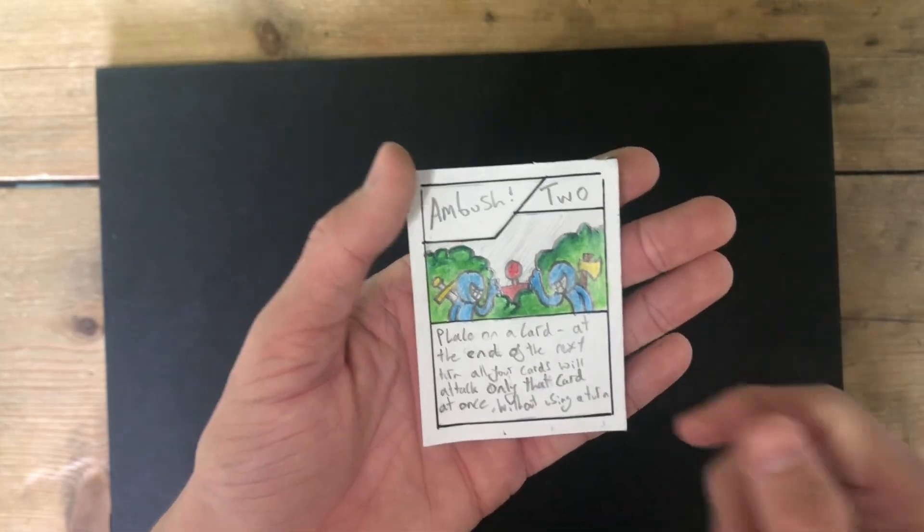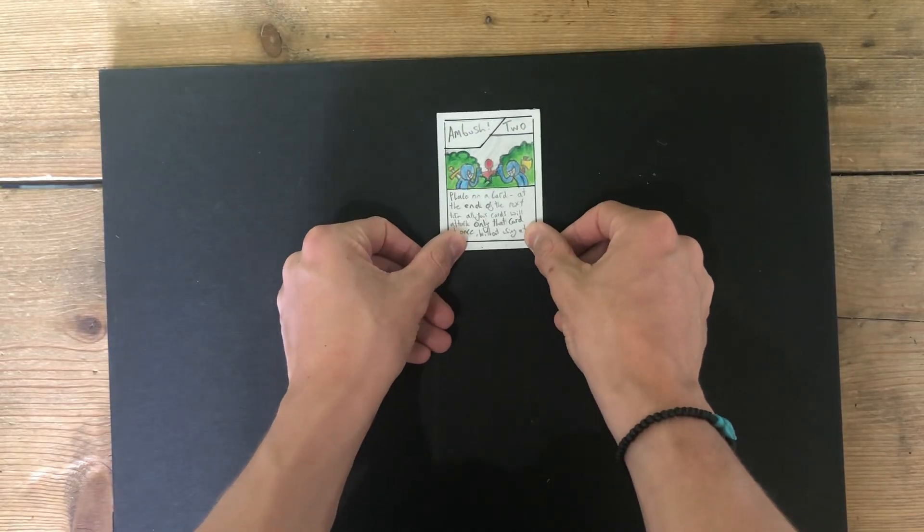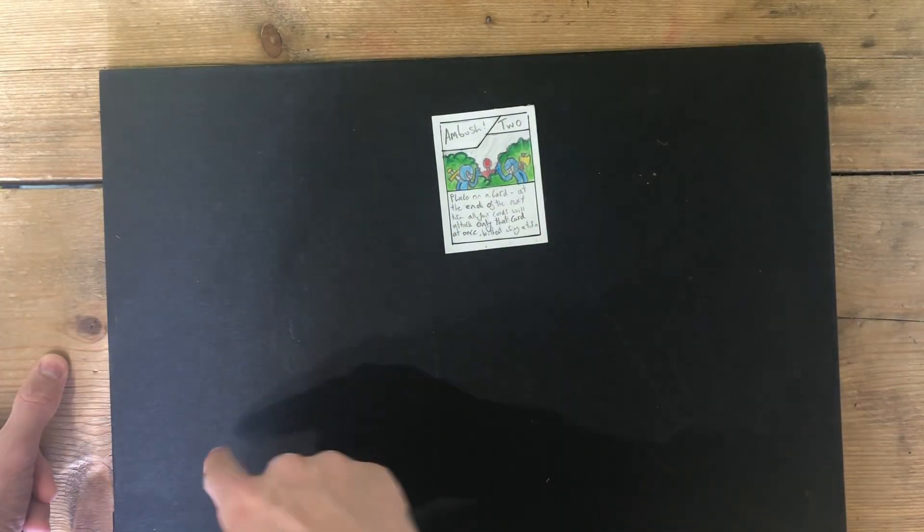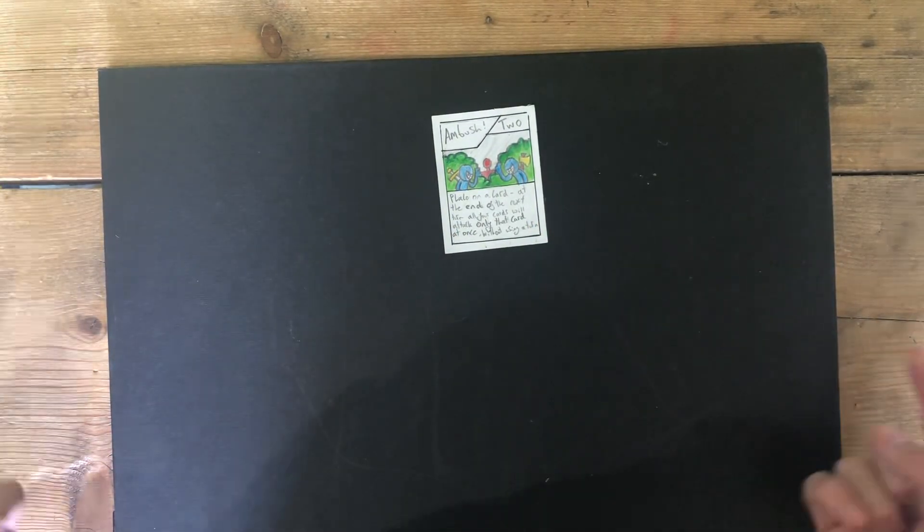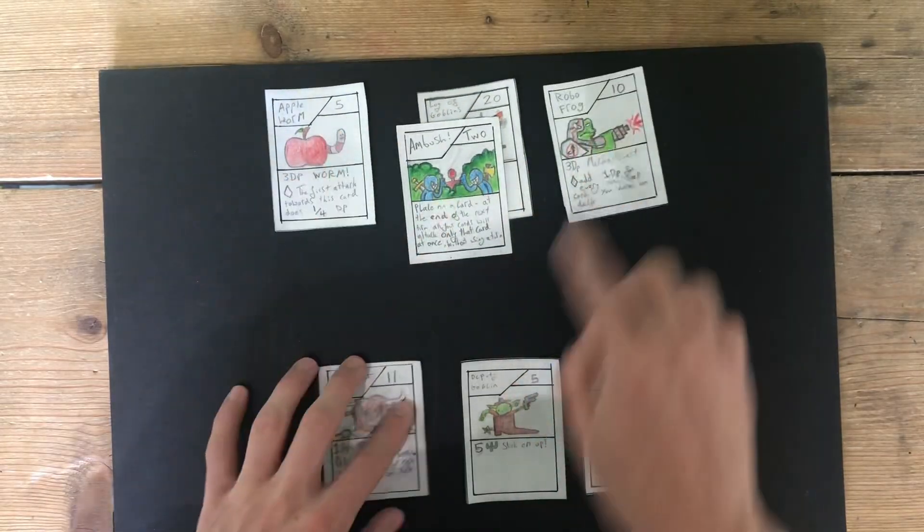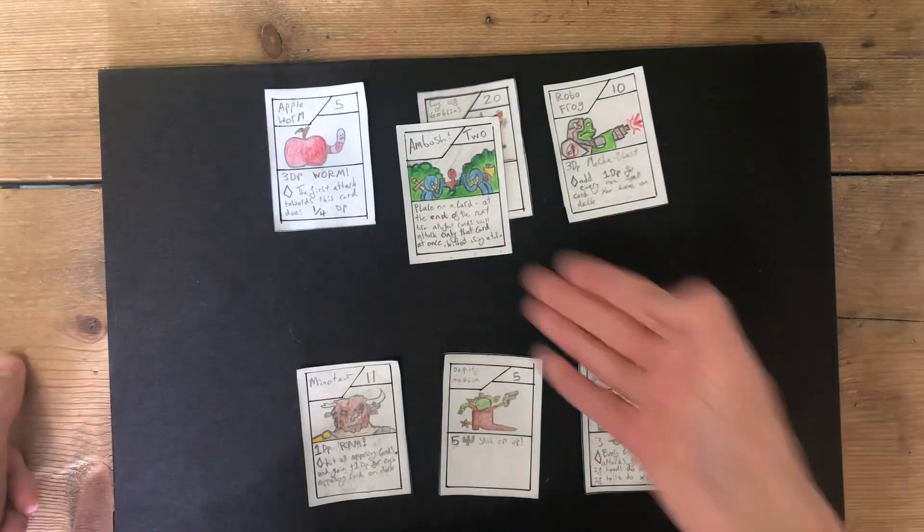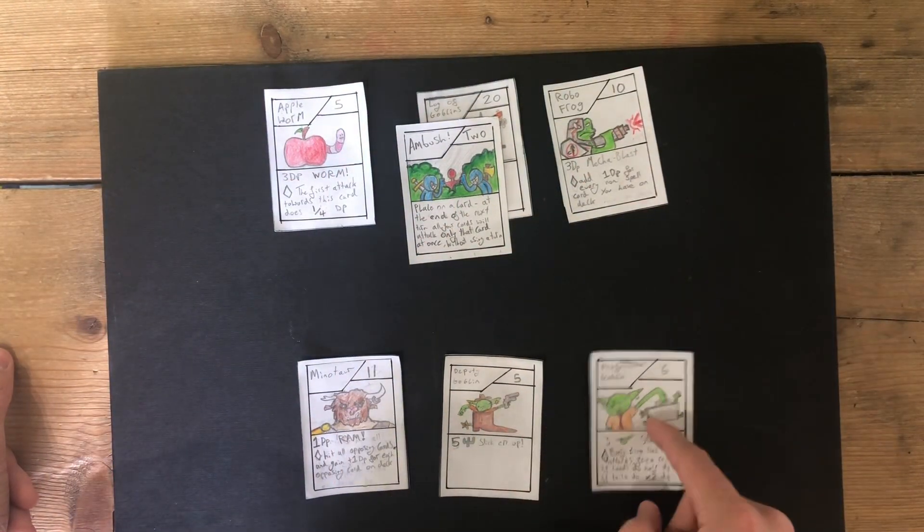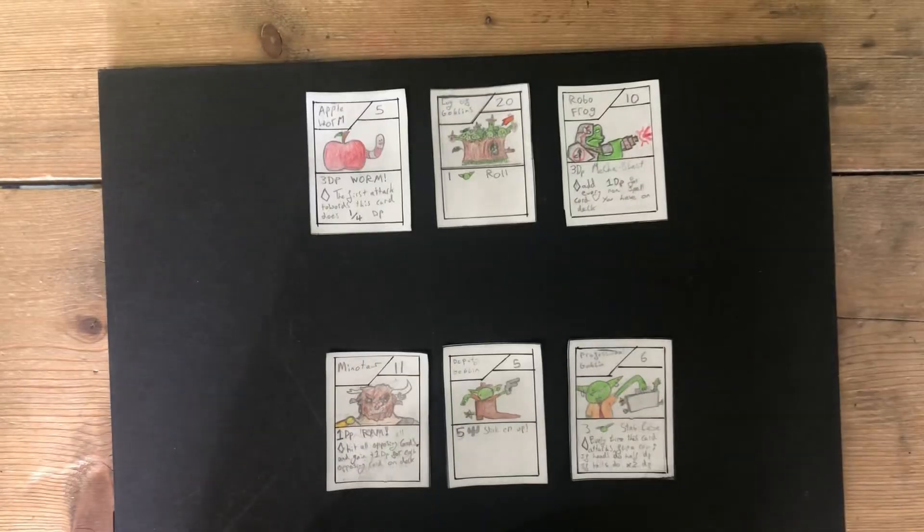Ambush. With a lifespan of 2, you'll play it on an enemy card. And at the end of your next turn, every single one of your cards will attack it. And only that card, without using an attacking turn. Playing it on the Log of Goblins, I would have to wait 1 turn, and then, the end of my next turn, all 3 of these cards would attack only the Log of Goblins.